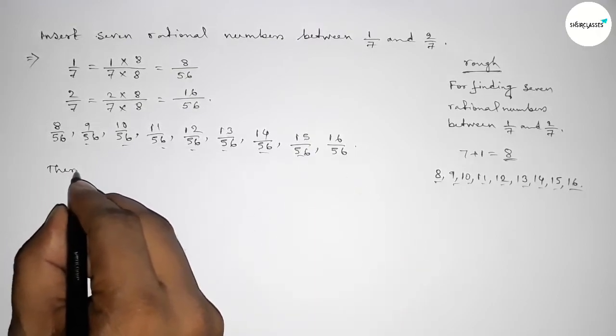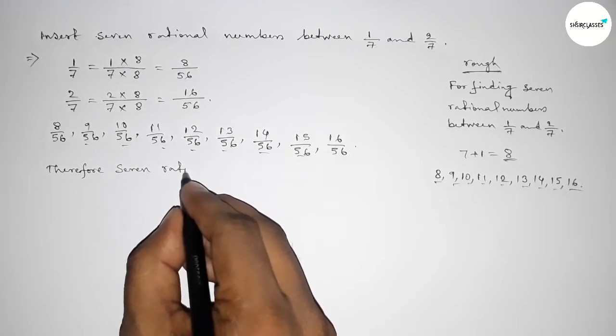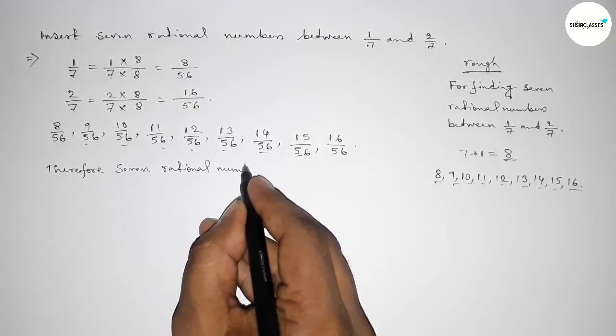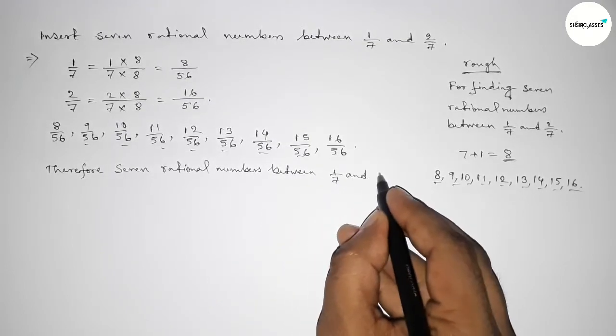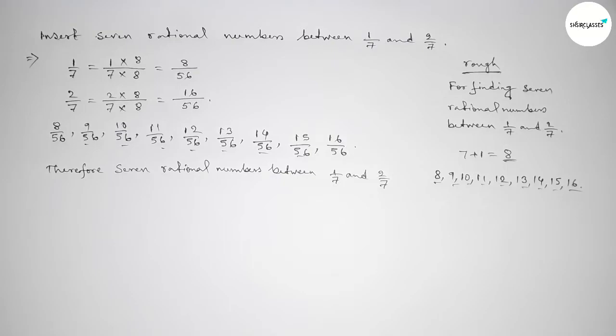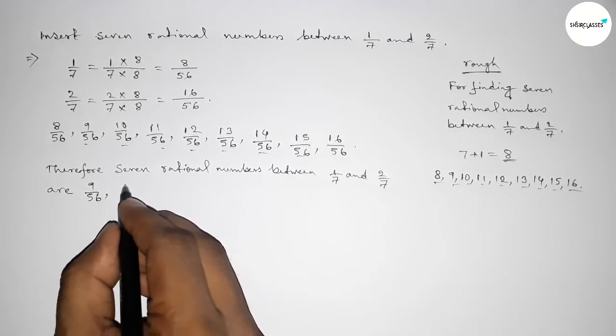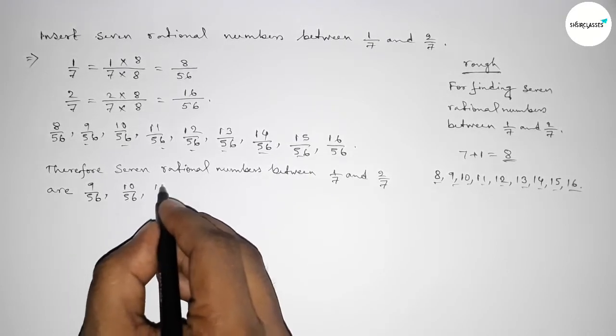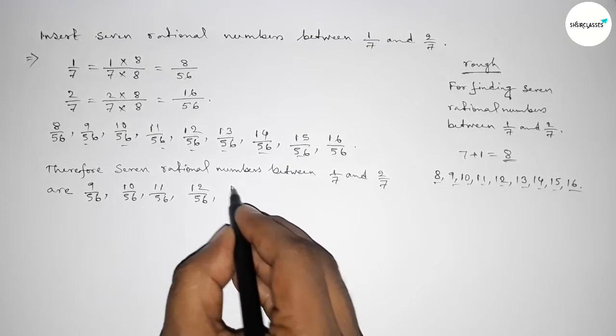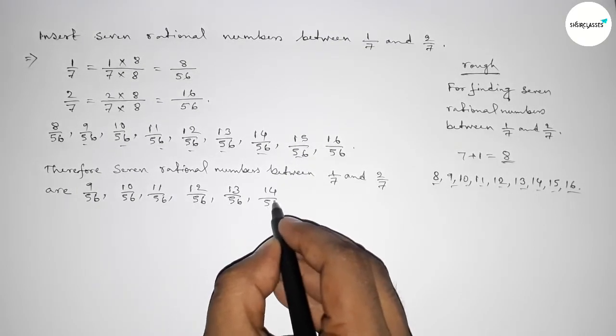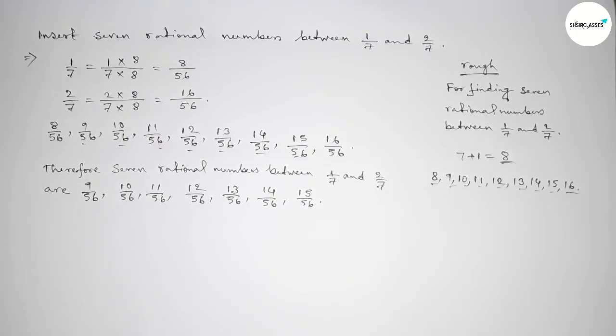Therefore 7 rational numbers between 1/7 and 2/7 are: first one will be 9/56, then 10/56, then 11/56, 12/56, up to last 15/56.